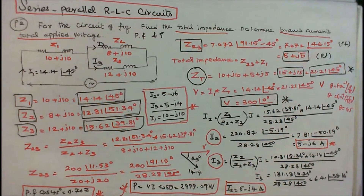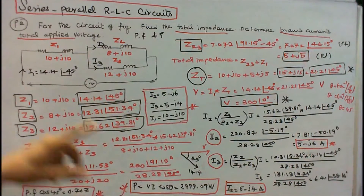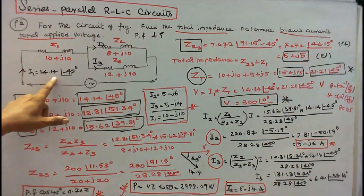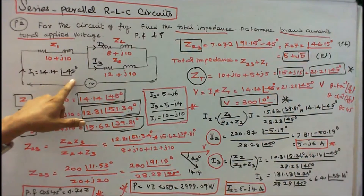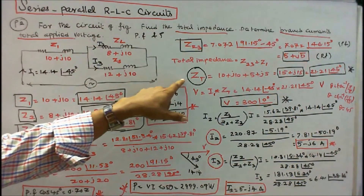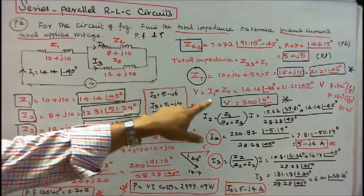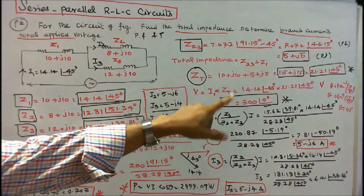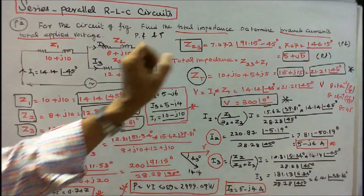I can find the applied voltage: V = I·Z. Here I1 is given as 14.14∠−45°. I know the total impedance, so V = 300∠0°.